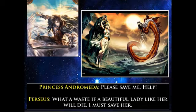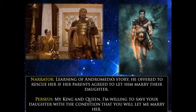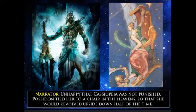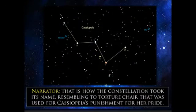Andromeda cried: 'Please save me! Help!' A hero who witnessed this exclaimed: 'What a waste if a beautiful lady like her will die! I must save her!' Learning of Andromeda's story, he offered to rescue her if her parents agreed to let him marry their daughter. 'My king and queen, I am willing to save your daughter with the condition that you will let me marry her.' He slew the sea monster and married Andromeda. Unhappy that Cassiopeia was not punished, Poseidon tied her to a chair in the heavens so that she would revolve upside down half of the time. That is how the constellation took its name, resembling the torture chair used for Cassiopeia's punishment for her pride.